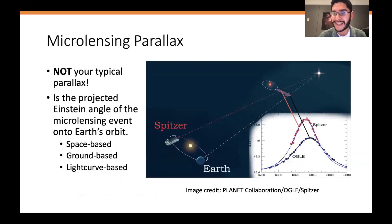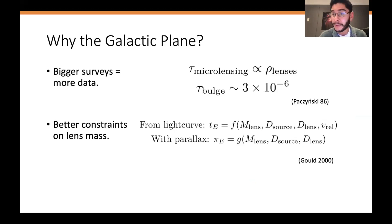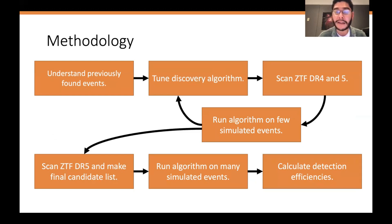I'll be talking about microlensing parallax, which is not your typical parallax — it's not the inverse of the distance to the object. Rather, it's the projected Einstein angle of this microlensing event onto Earth's orbit. This is a very important quantity to measure because it provides an independent constraint on the lens mass. The reason we're looking toward the galactic plane is because we have longer duration events, which give us a better measurement of this microlensing parallax. ZTF now has enough data, being a very big survey across the whole northern sky, to increase the probability of observing events toward the galactic plane.